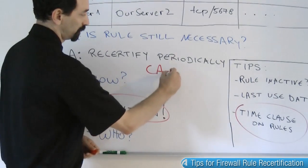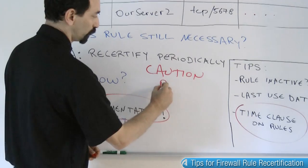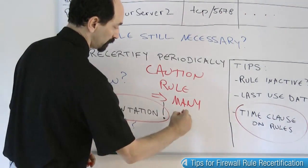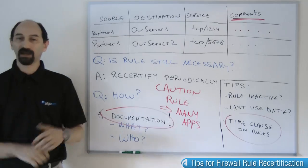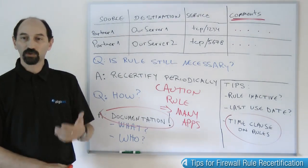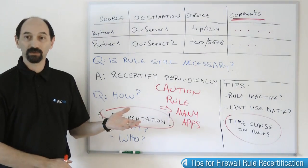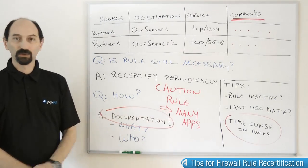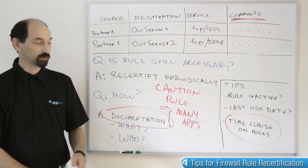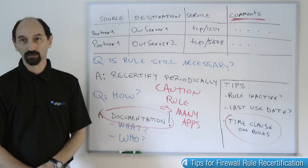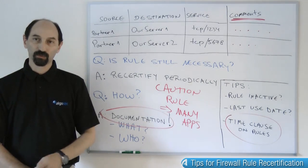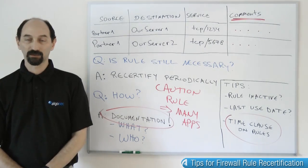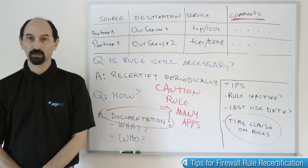One word of caution: you could have one rule that supports many applications. Perhaps John asked for a rule last year, and then six months later Jane asked for a rule that would support her application, and technically those two requests were merged into one rule. So when you decide that John's rule is no longer necessary, it doesn't mean you can eliminate the firewall rule. You need to check and discover all the applications that rely on that one rule and get approval from all the business owners before it can be eliminated. There are applications out there that assist you in discovering these relationships between applications and rules.